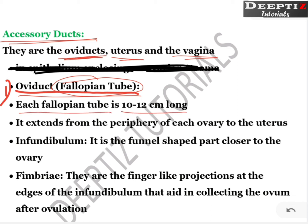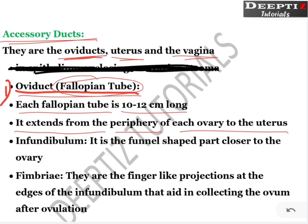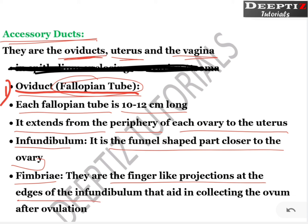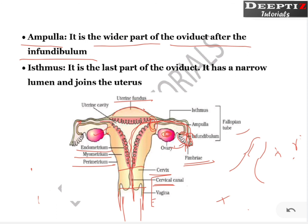Each fallopian tube is 10 to 12 centimeters long. It extends from the periphery of each ovary to the uterus. The infundibulum is the funnel-shaped part closer to the ovary. The fimbria are finger-like projections at the edges of the infundibulum that aid in collecting the ovum after ovulation. Ampulla is the wider part of the oviduct after the infundibulum where fertilization takes place. Isthmus is the last part of the oviduct — a narrow lumen that joins to the uterus.